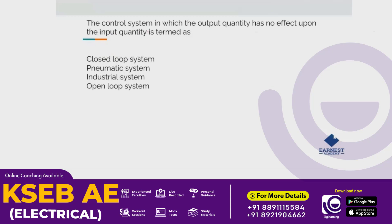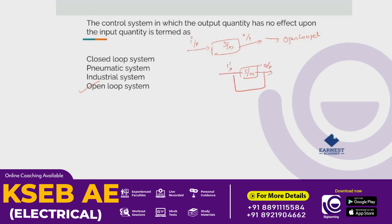In a control system where the output quantity has no effect upon the input quantity, that is an open-loop control system. With feedback, that is a closed-loop control system.